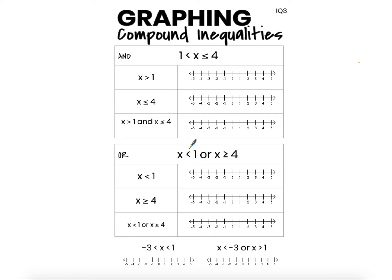When I look at this compound inequality — x is less than 1 or x is greater than or equal to 4 — I'm looking at the set of numbers that are either less than 1 or greater than or equal to 4, and not both. So 0, negative 3, negative 1,000, a half — those are all numbers less than 1, but they are not greater than or equal to 4.